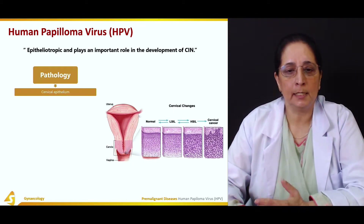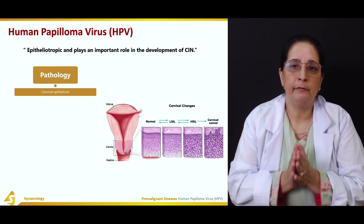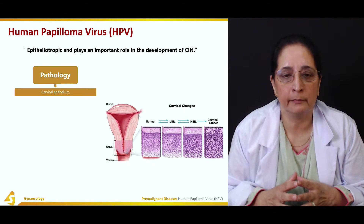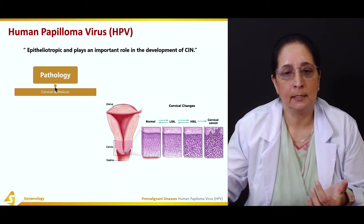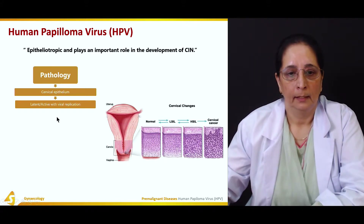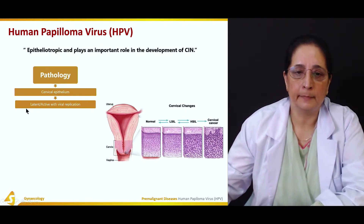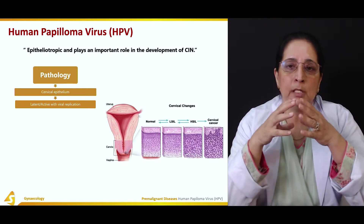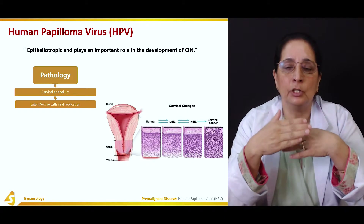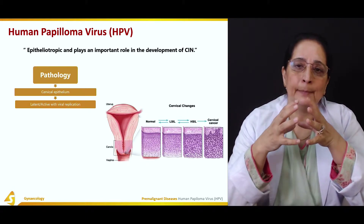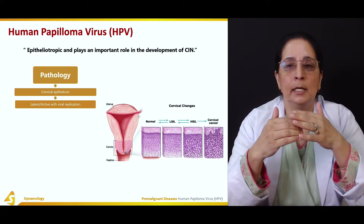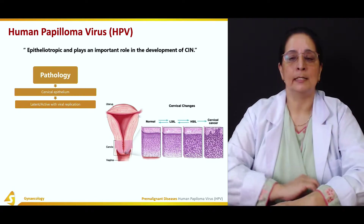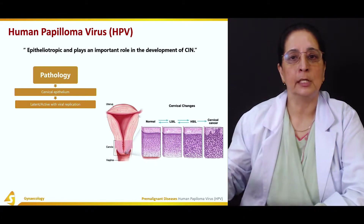The pathology describes how HPV leads to cervical cancer. First, it attacks the cervical epithelium. Then it undergoes active viral replication or becomes latent. Once HPV enters the cervical epithelium, the virus replicates and can become latent. When the patient's immune defense weakens, active replication resumes. Both conditions can occur.